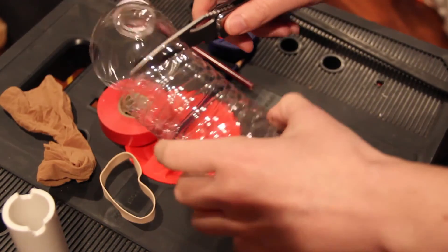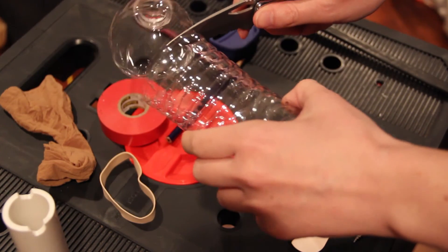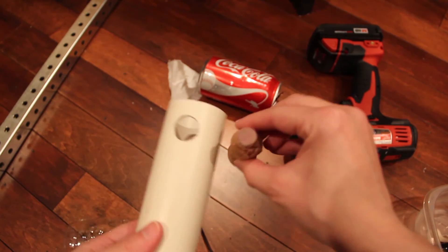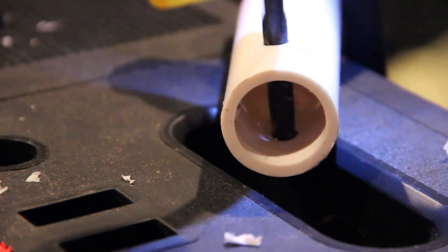You also have to cut the top off of a plastic bottle that is wide enough for a soda can to rest. Cut a hole in the bottom for the rubber band to fit through. Cut a piece of PVC pipe and drill a hole in the top for the upper roller.